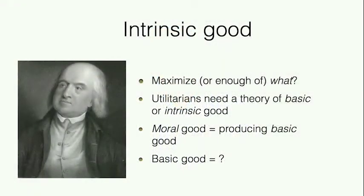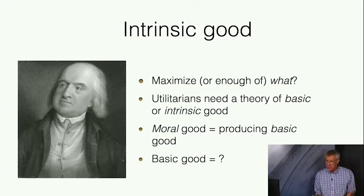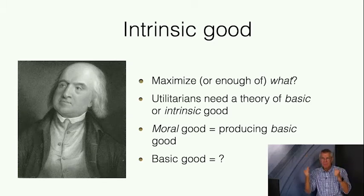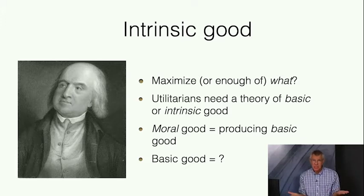Any kind of consequentialist theory has to have a theory of intrinsic good or basic good. A utilitarian wants to either maximize or satisfy—that is, either demand the best or demand something good enough. But in what respect? You want to maximize or get enough of what exactly? The utilitarian has to answer that question. You need a theory of the basic or intrinsic good. Actions—or, if you're a different kind of consequentialist, a rule, policy, motive, character trait, or civilization—are good to the extent that they have good consequences. You have to say what a good consequence is.